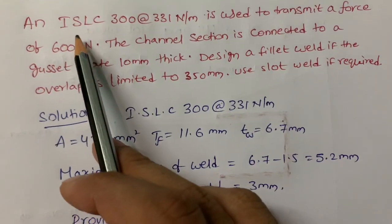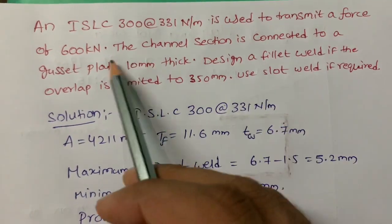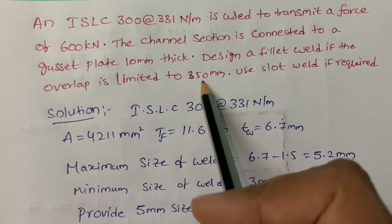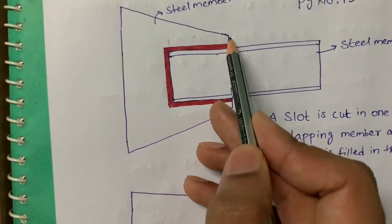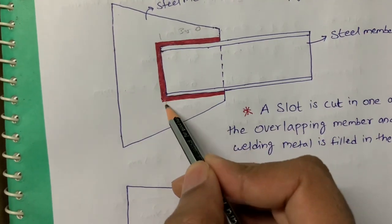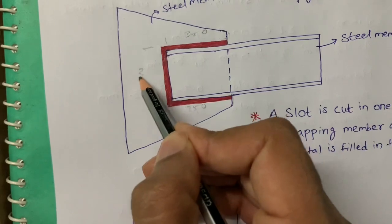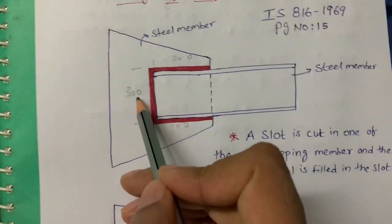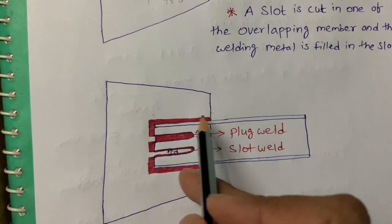Now I am going to solve a problem regarding slot welding. The problem: IS LC 300 at 331 N/m (Indian Standard Light Channel Section 300) is used to transmit a force of 600 kN. The channel section is connected to a gusset plate 10 mm thick. Design a fillet weld if the overlap is limited to 350 mm. The depth of the channel is 300 mm.